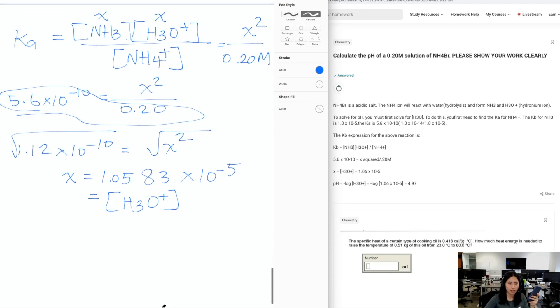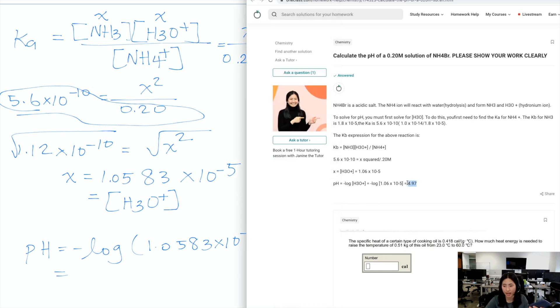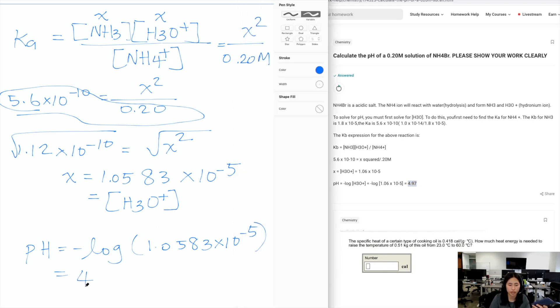So once we have that, all we have to do is we have pH, which is equal to the negative log of 1.0583 times 10 to the negative 5. And when we take the negative log of that, that should give you 4.97, which we have that right here I've highlighted, and that's right. So this is 4.97. Taking into account the number of significant figures, which is 2. So 4.97. So that's the pH.